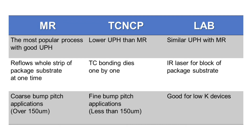TC-NCP also requires a dedicated machine. LAB is good for low-K devices which are sensitive to thermal stress. It applies IR laser for bump connection, and the process is done for a block portion of the package substrate strip with multiple units. But it also requires a dedicated machine with an optic system.